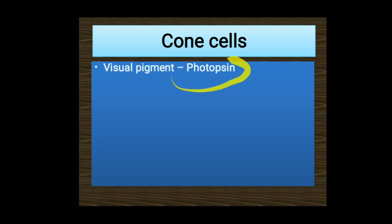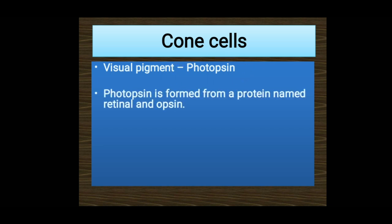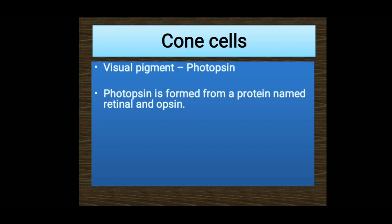Now let's see the features of cone cells. The visual pigment present in cone cells is photopsin, and it is also formed from a protein named retinal and opsin. You may be wondering — both rhodopsin and photopsin are made of retinal and opsin. Even if the name is the same, there is a slight change in composition between the two visual pigments rhodopsin and photopsin.